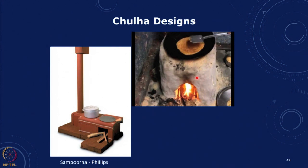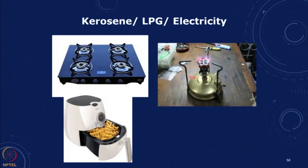The initial capital cost of improved chulas is slightly higher, but there is an advantage in terms of efficiency and health impact. Moving further up the energy ladder, kerosene and LPG offer much higher power delivery rates, high efficiencies, and better controllability. This includes pressurized kerosene stoves and electric appliances like air fryers, which in terms of convenience, efficiency, and emissions are much better.